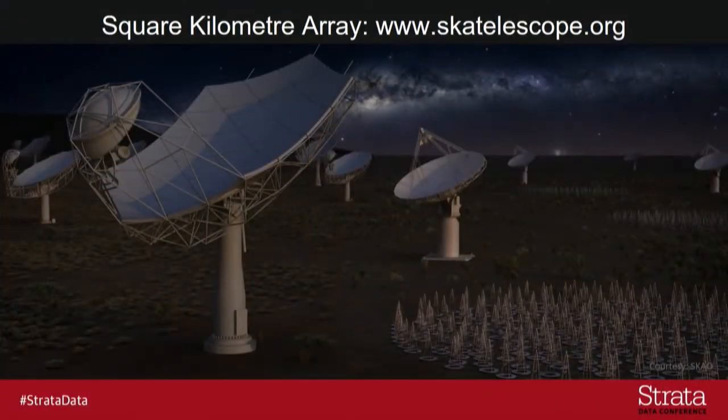So let's talk about the SKA and how much data it is. This is going to be an instrument built on two continents. There's going to be 200 dishes built in South Africa, not unlike the dishes that you see here in the slides. And there's going to be 130,000 dipole antennas in the desert in Western Australia — those are those Christmas tree-like things that you see at the bottom there.